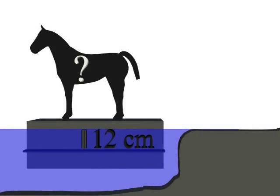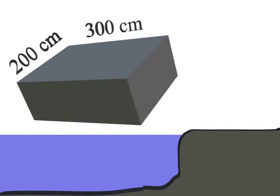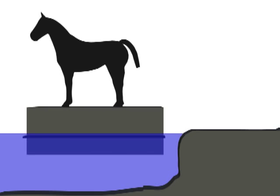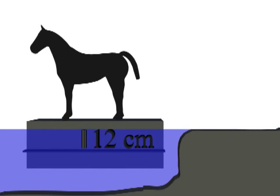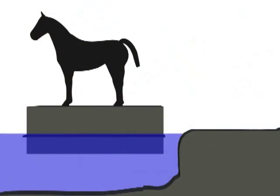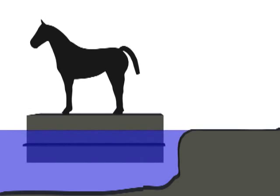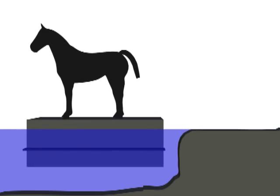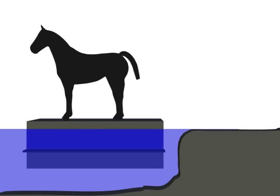Now to solve the horse problem. We have a rectangular barge measuring 300 centimeters by 200 centimeters, sitting in a freshwater lake. A horse jumps onto the barge, causing the barge to sink 12 centimeters. How much does the horse weigh? Like the stone sitting on the wood block, the horse has displaced water equal to its own weight. We need to calculate the weight of this displaced water. The volume of water displaced by the weight of the horse is a rectangular prism.